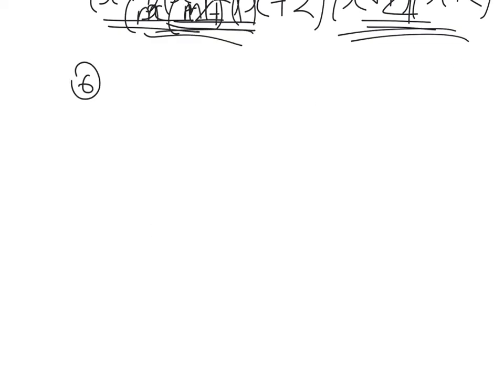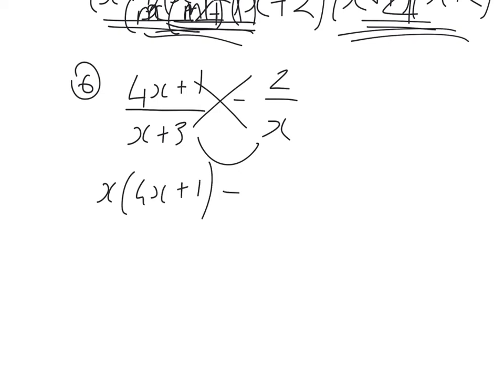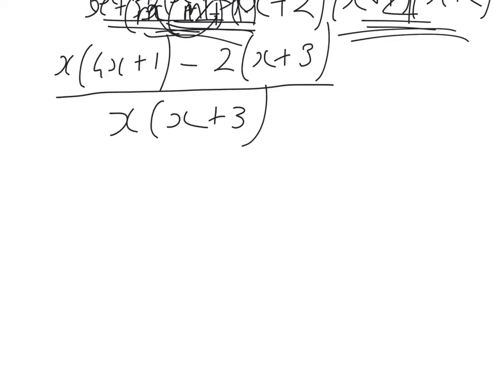Example 6. 4x plus 1 over x plus 3 minus 2 over x. So 4x plus 1 bracket x minus 2 bracket x plus 3, over x bracket x plus 3. I'm going to tidy up the top.